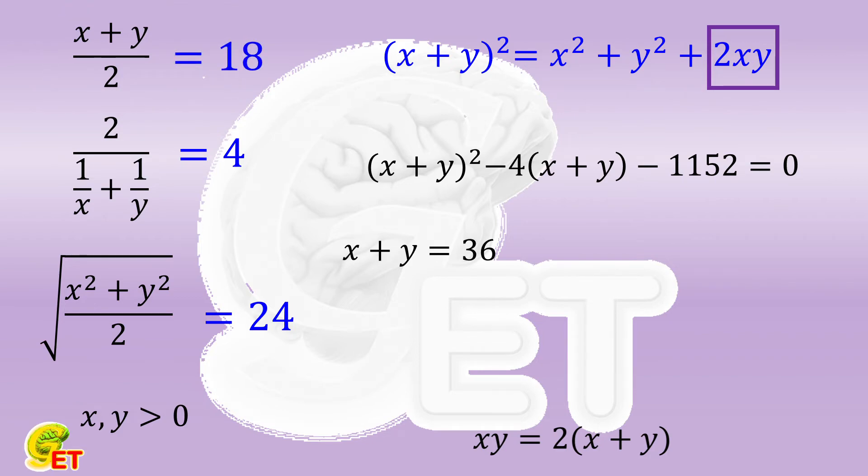In fact, here we not only have x plus y equal to 36, but also have x times y equals twice x plus y, which is 72.